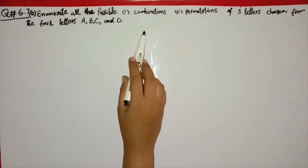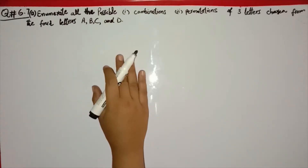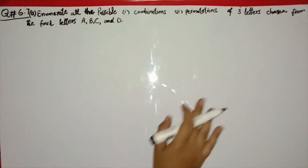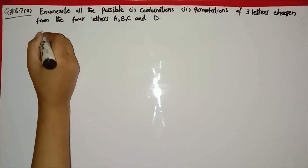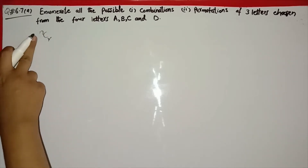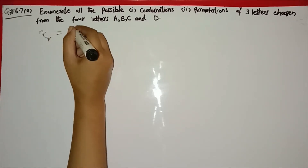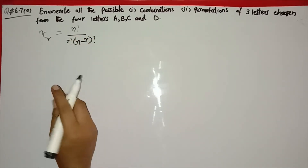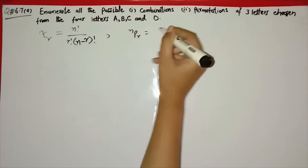We need to find all possible combinations and permutations of three letters chosen from the four letters a, b, c, and d. The combination formula is nCr, where n is the number of distinct objects and r is the number of objects chosen, and the formula is n factorial over r factorial into (n minus r) factorial. The permutation symbol is nPr and its formula is n factorial over (n minus r) factorial.